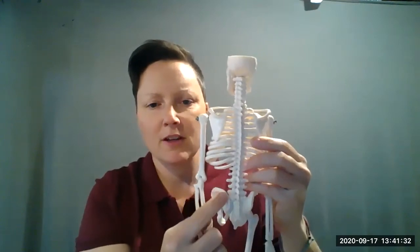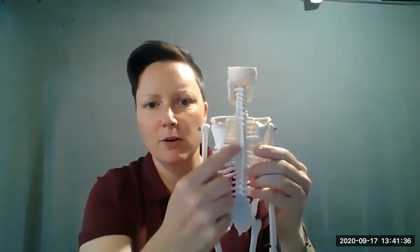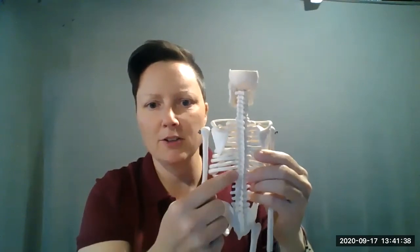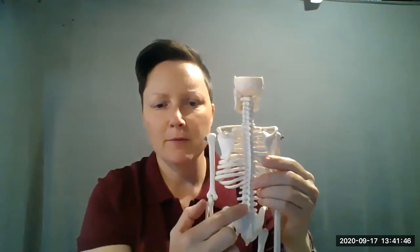There are seven cervical vertebrae up at our neck, 12 thoracic where we have our ribs attaching, and then five lumbar. A good way to remember those numbers might be the times of day that you could eat: 7 a.m., 12 p.m., 5 p.m.